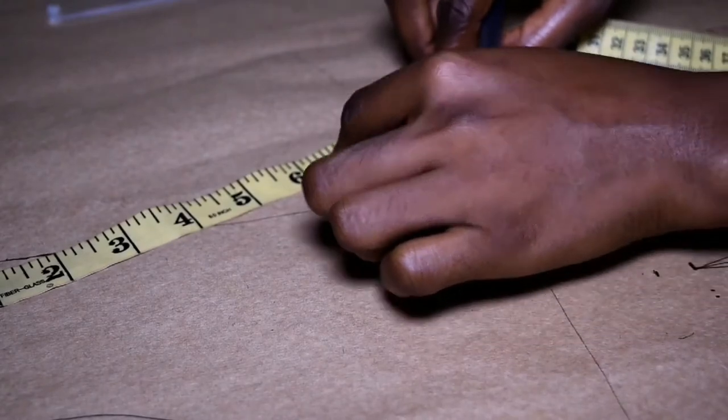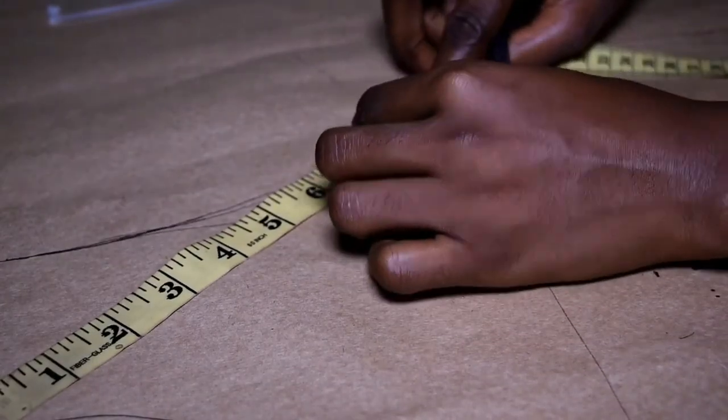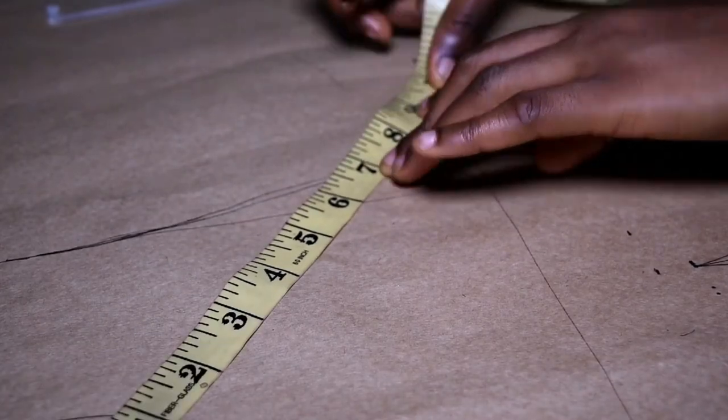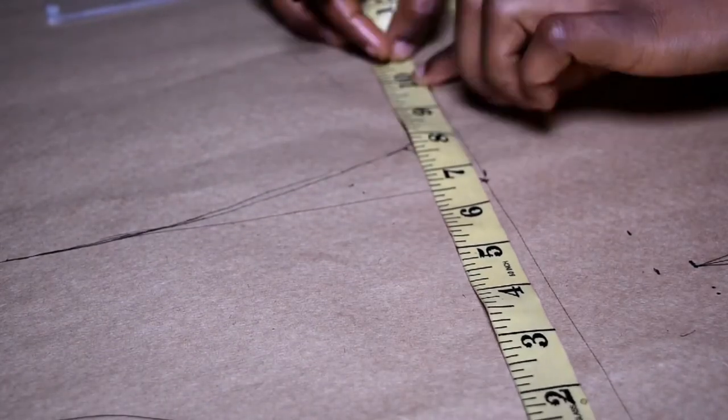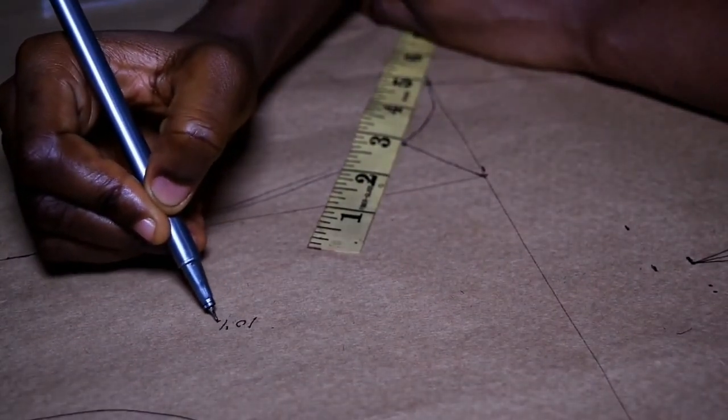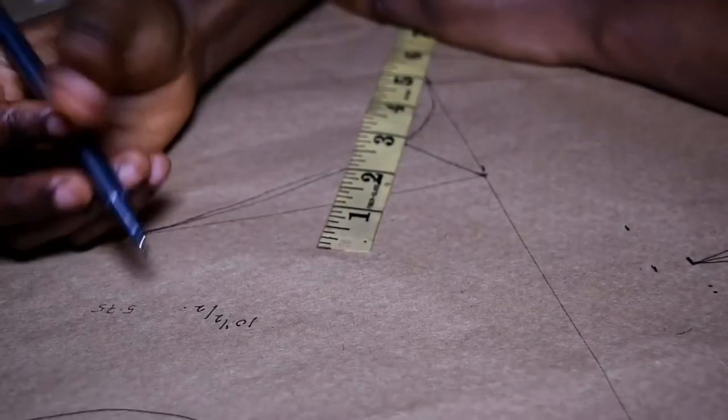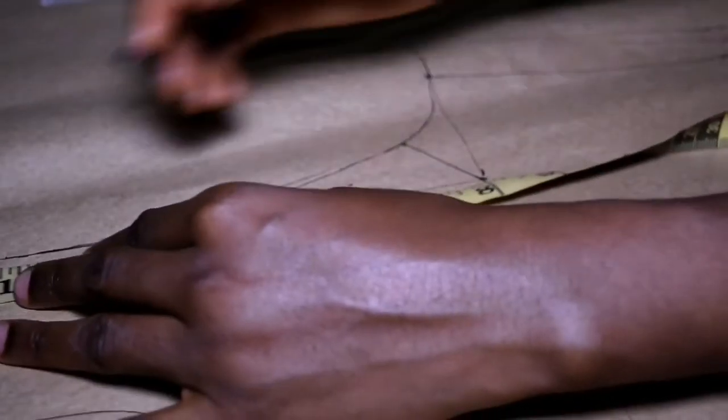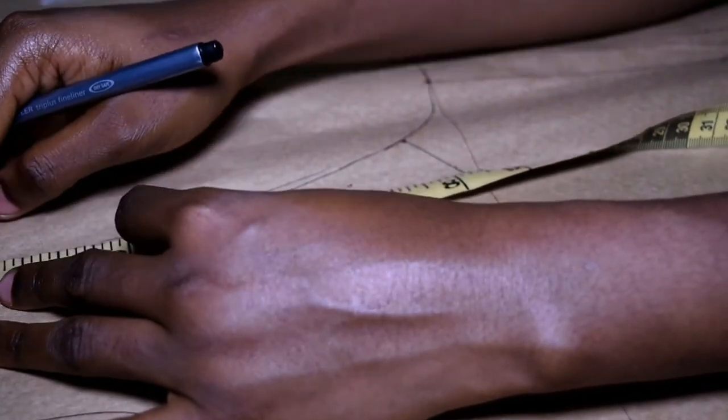So this curve is about 10.5 inches, about 10.5 inches. So I'm going to divide it by two, giving us 5.25 inches, and then I mark on my armscye or armhole.